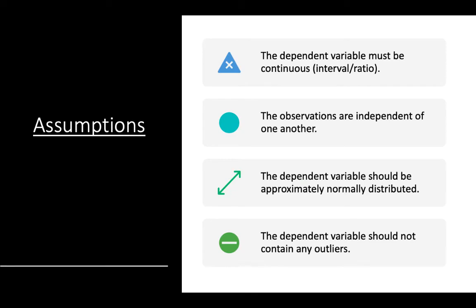Here are the assumptions, which are the same as other parametric tests. The dependent variable needs to be normally distributed and continuous — you can't have a categorical DV for a paired sample T. Observations are independent of one another. The dependent variable should not contain any outliers because the test is sensitive to outliers.